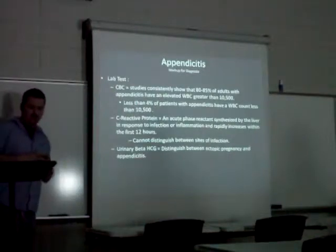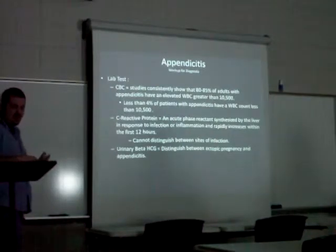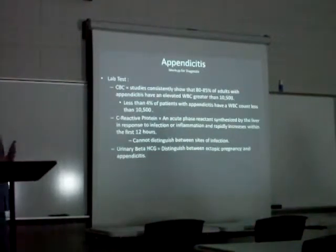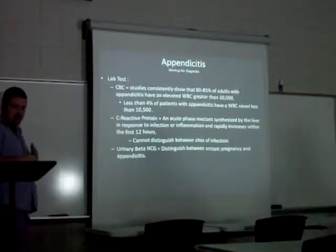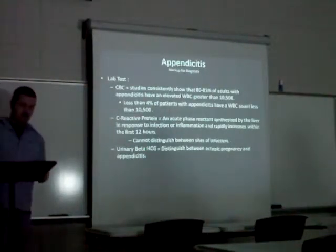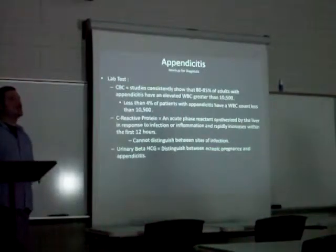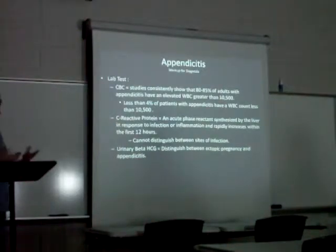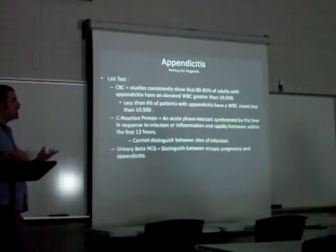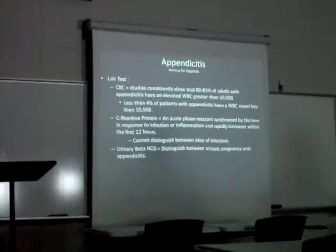C-reactive protein (CRP) is an acute phase reactant synthesized by the liver in response to infection or inflammation and rapidly increases within the first 12 hours. It is a very indicative test to see if an infection is occurring, although it cannot distinguish where in the body that infection is. A urinary beta-HCG pregnancy test should also be ordered in women to rule out ectopic pregnancy, given the overlapping symptoms.